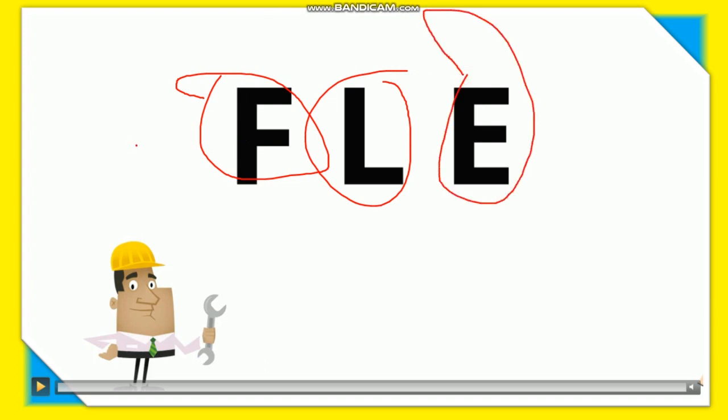So F — which middle position? First class. L — which middle position? Second class. And E — which middle position? Third class. This mnemonic FLE helps you remember what is at the center for each class of lever.